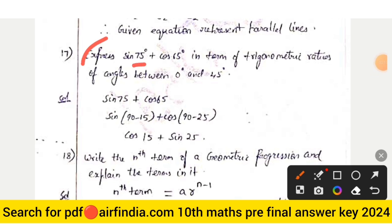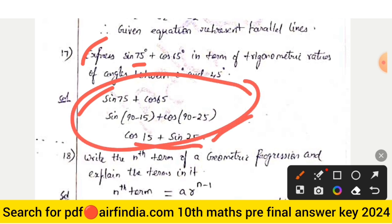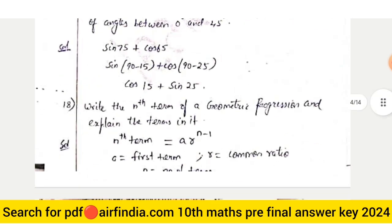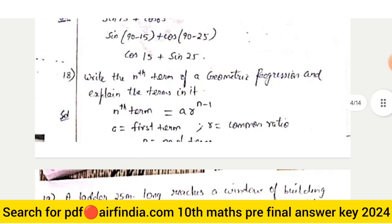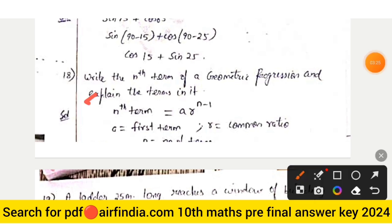Question number seventeen: express sin 75° + cos 65° in the form of a complementary angle. Question number eighteen: write the nth term of a geometric progression and explain the nth term and common ratio.